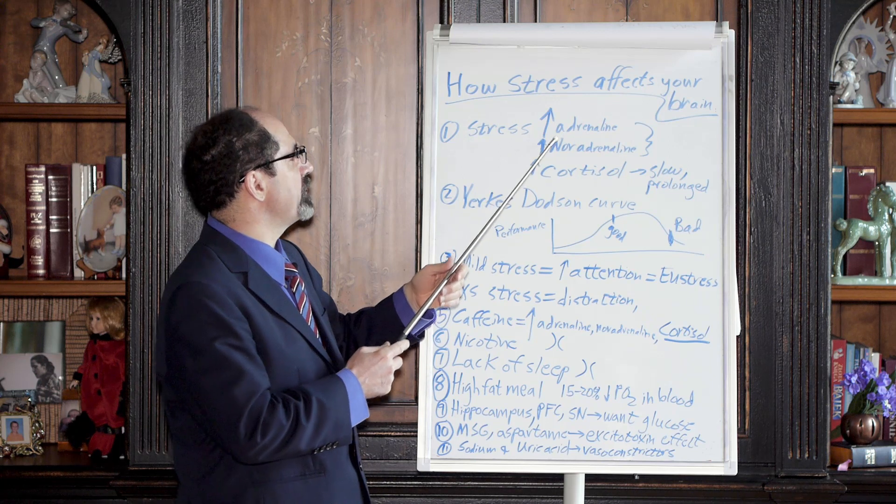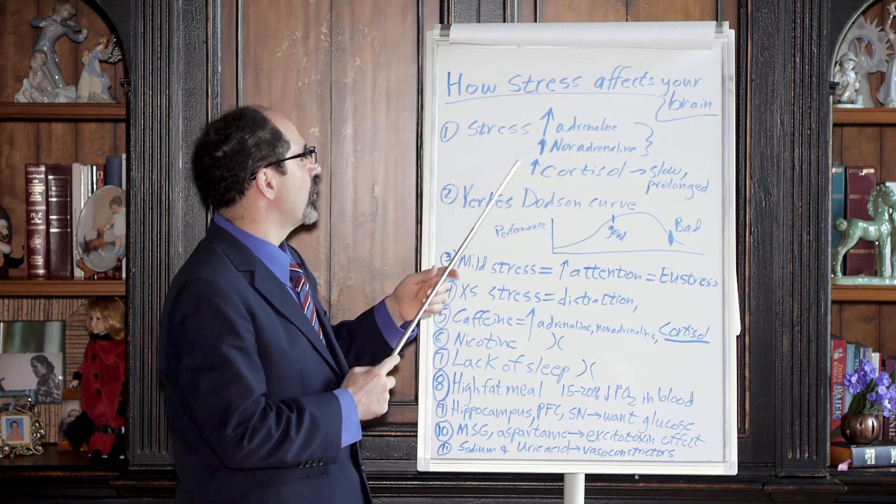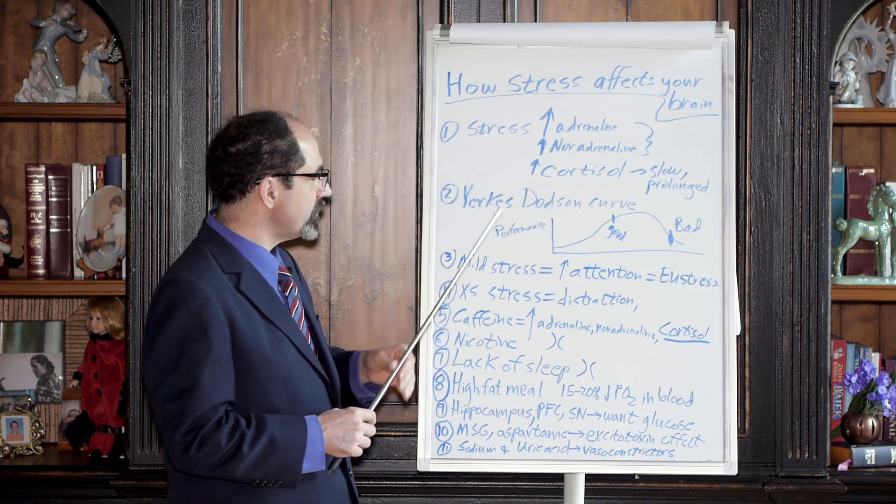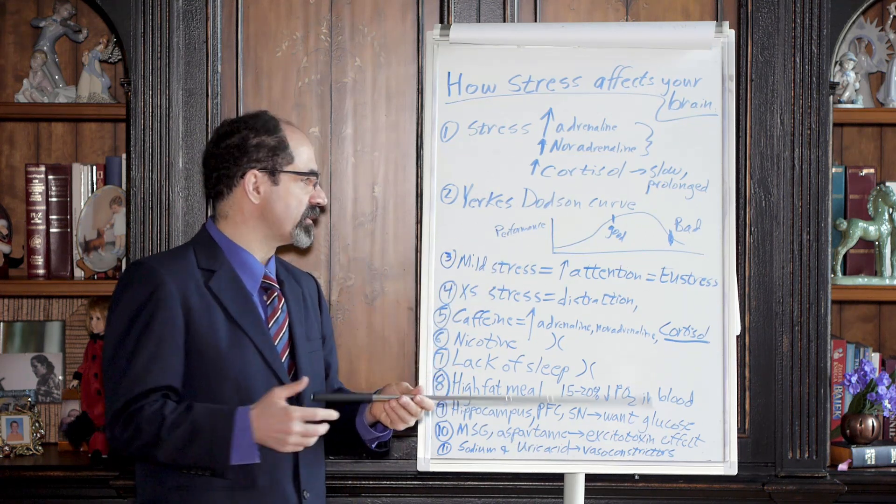Anyways, stress increases three main hormones: adrenaline, noradrenaline, and cortisol. The one that has the biggest effect on the brain for our purposes is going to be cortisol. A little bit of stress can be a good thing, so-called eustress.